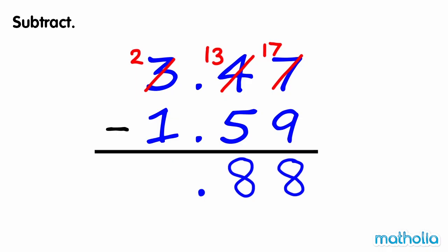Subtract the ones. 2 ones minus 1 one equals 1 one. So 3.47 minus 1.59 equals 1.88.